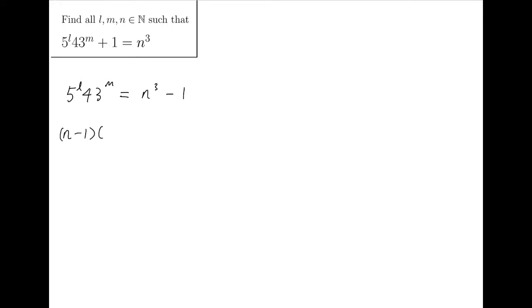After factorizing, we have N minus 1 times N squared plus N plus 1. I tend to move the factorized expression to the left-hand side instead, so we switch sides. Then it equals 5 to the L times 43 to the M.